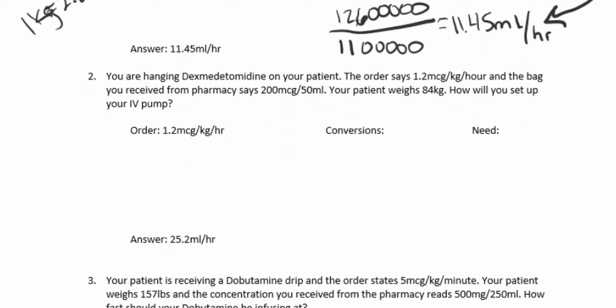Let's get started with number two. You're hanging dexmedetomidine on your patient. The order says 1.2 micrograms per kilogram per hour, and the bag you receive from pharmacy says 200 micrograms per 50 mL. Your patient weighs 84 kilos. How will you set up your IV pump? We need milliliters per hour. Our order is 1.2 mcg/kg/hr, and we have 200 mcg per 50 mL.